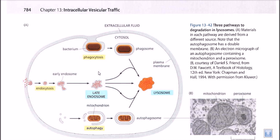Let's talk about how these work together using this picture. Suppose a bacterium enters the cell — it's dangerous and harmful, so the cell has to degrade it. The cell will engulf this bacterium via phagocytosis. Phagocytosis is a type of endocytosis where what is being taken in is a solid, large particle rather than a liquid one. After phagocytosis, what is produced is called a phagosome.